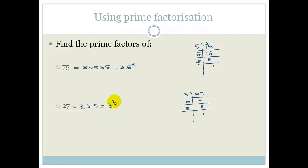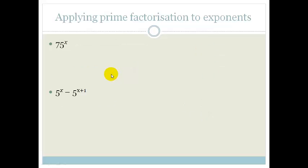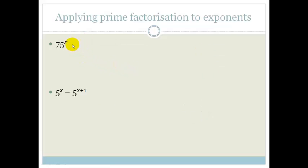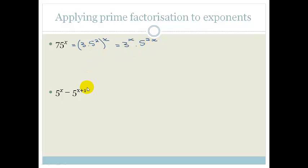Now let's see how we can use this prime factorization in exponent examples. We proved that 75 is 3 times 5 squared. So we could say that this is 3 times 5 squared all to the power of x, which could be written as 3 to the power of x times 5 to the power of 2x — remember you multiply across the brackets.